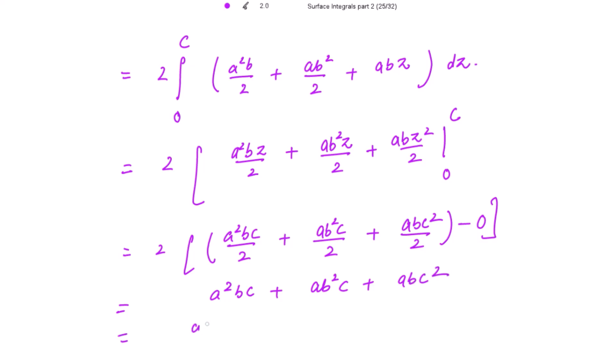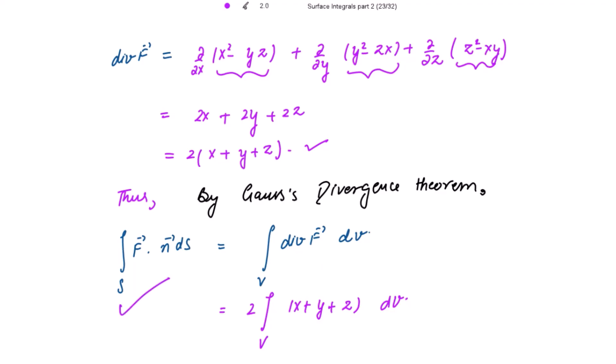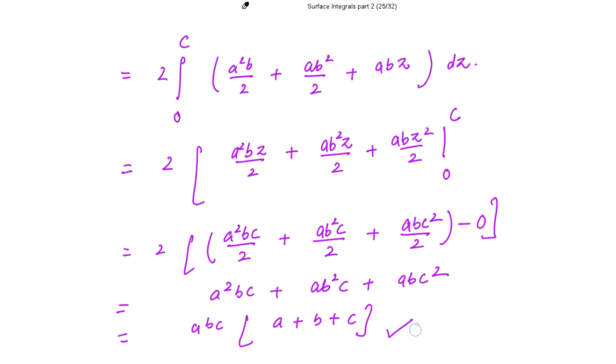Taking abc common, we get abc(a + b + c). This is the required answer for the volume integral, and now we need to evaluate the surface integral directly to verify we get the same answer.